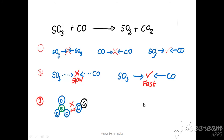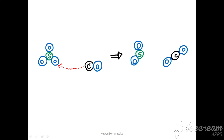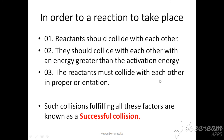Third, in carbon dioxide it is the carbon atom that receives the oxygen. So even if the carbon monoxide molecule collides with sulfur trioxide, if it approaches from the oxygen side of CO there is no point. The carbon atom side of CO must collide with the oxygen atom of SO₃ — only then does the oxygen attach to carbon, producing carbon dioxide and sulfur dioxide. Fulfilling all three factors allows the reaction to produce products.